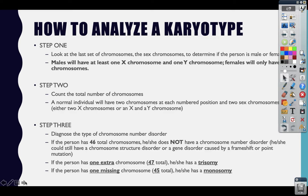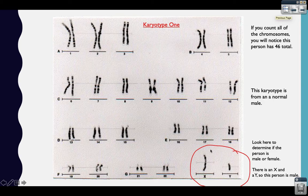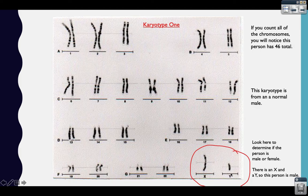Now let's put this into practice and analyze a karyotype together; then you'll practice some on your own. Always remember to start at the bottom of the karyotype to figure out if the person is male or female. On each karyotype, I will have circled where you'll find the sex chromosomes. This person has a chromosome over the X position and a chromosome over the Y position, so this person is considered to be male.